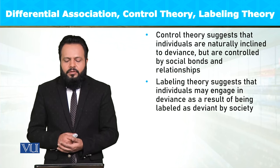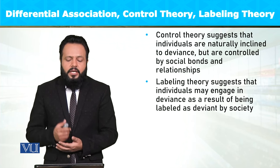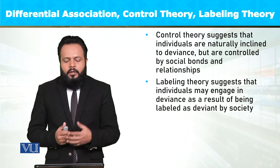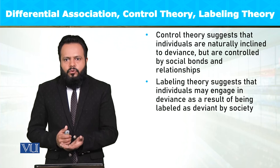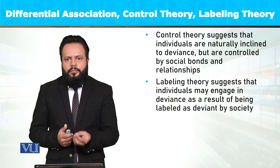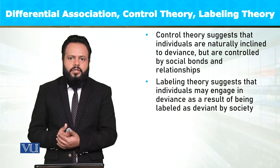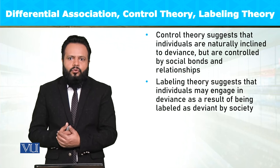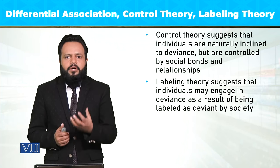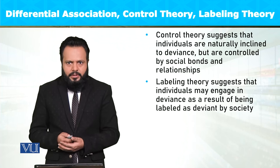Labeling theory suggests that individuals may engage in deviance as a result of being labeled as deviant by society. ایسے رویے جن کو کبھی نہ کبھی deviancy کے طور پر commit کر بیٹھتے ہیں، اگر معاشرہ کسی individual کو اس حوالے سے label کر دے، تو وہ رویہ perpetuate کرتا ہے اور individual اپنے اس label کو carry کرتے ہوئے اسی رویہ پر عمل کرنا شروع کر دیتا ہے۔